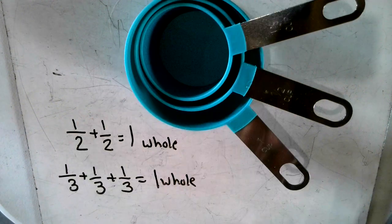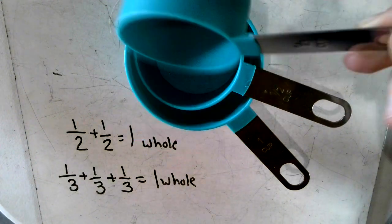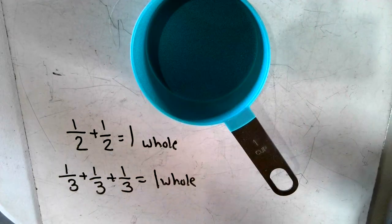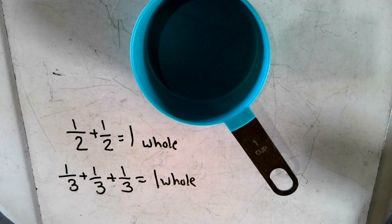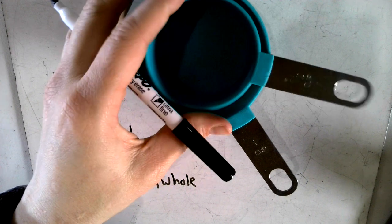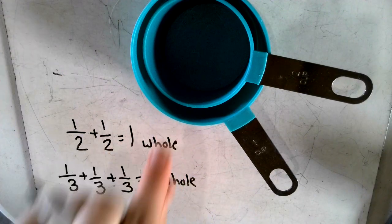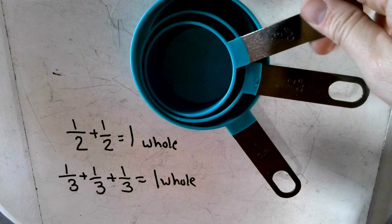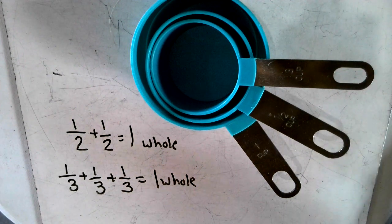So three of these to make one of these. To make one of those, it took two of this one to make one of the big ones. Now the smallest of the measuring cups is the fourth cup.